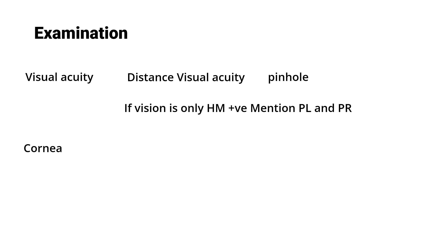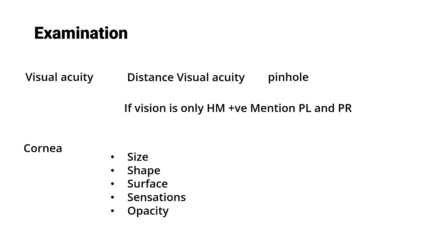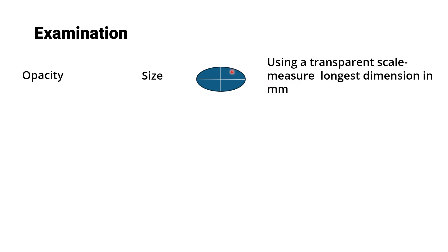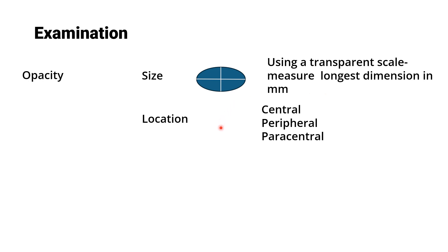Complete the examination of ocular posture, head posture, then lids, lacrimal apparatus, and conjunctiva. For the cornea, describe the size, shape, surface, and sensations. For transparency, describe the opacity: measure the vertical and horizontal dimensions using a transparent scale — the longest dimension in millimeters and the perpendicular dimension. Mention the size and location: whether it is central and involving the pupillary area, peripheral near the limbus, or paracentral.